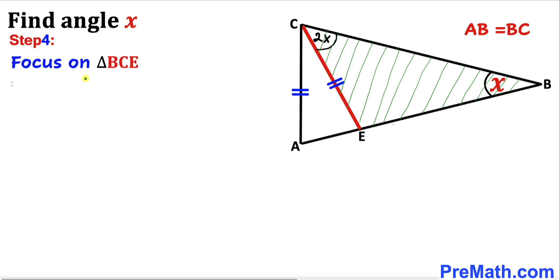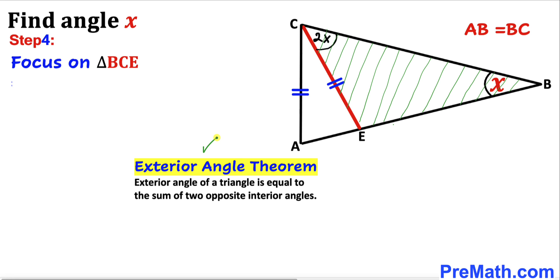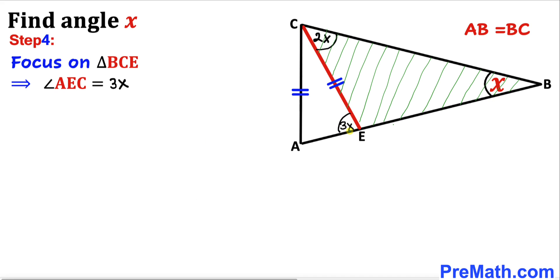Now let's focus on triangle BCE and recall the exterior angle theorem once again. According to this theorem, this angle is going to be our exterior angle, and it is the sum of these two opposite interior angles: 2X plus X, which is going to become 3X. Therefore angle AEC turns out to be 3X.